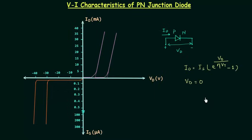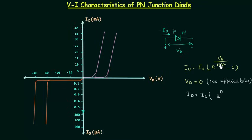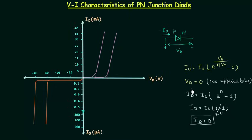If we consider the condition where Vd equals 0 — meaning voltage across the diode is zero, also called no applied bias — we can find the diode current using the equation: Id = Is times (e raised to power 0 minus 1). Since e raised to power 0 is 1, we get Id = Is times (1 minus 1) = 0. So when voltage across the diode is zero, the diode current is also zero.